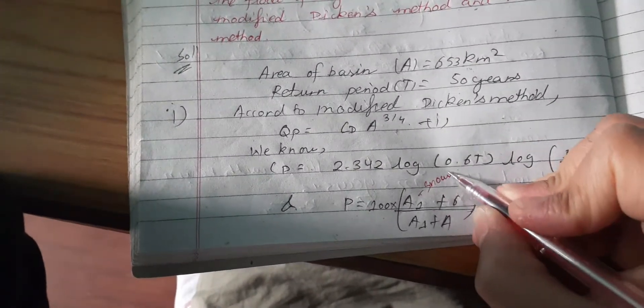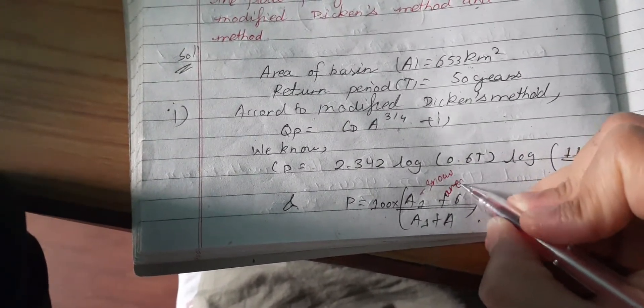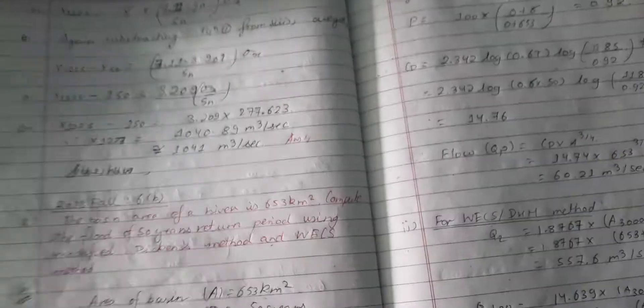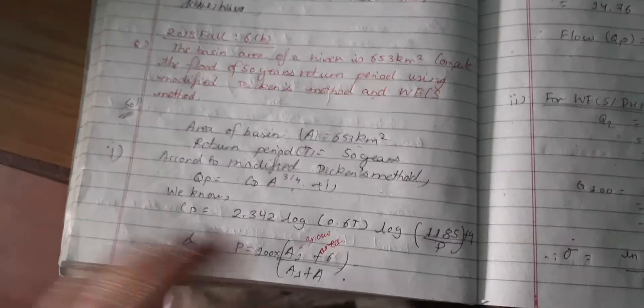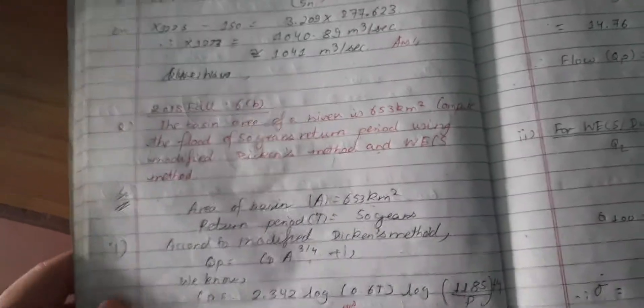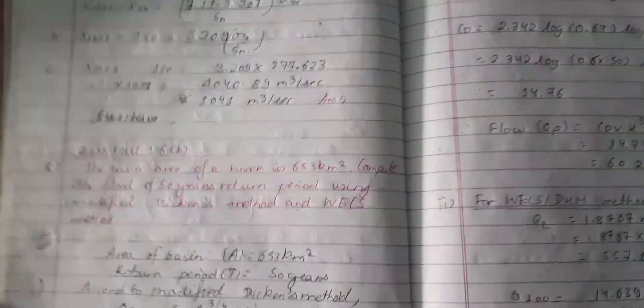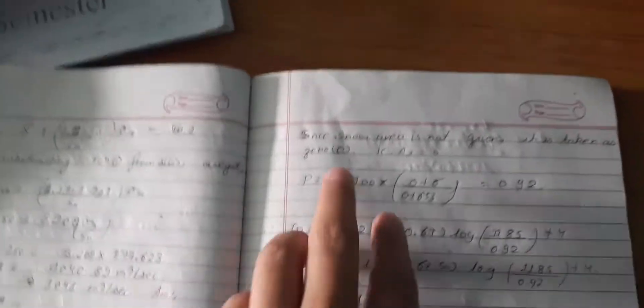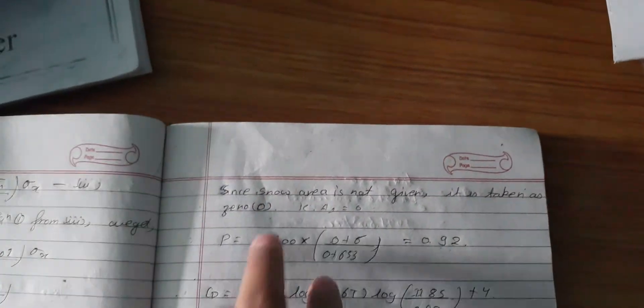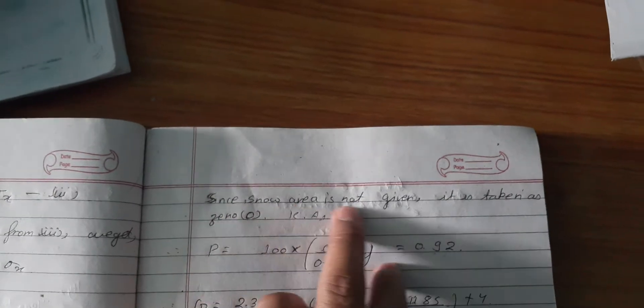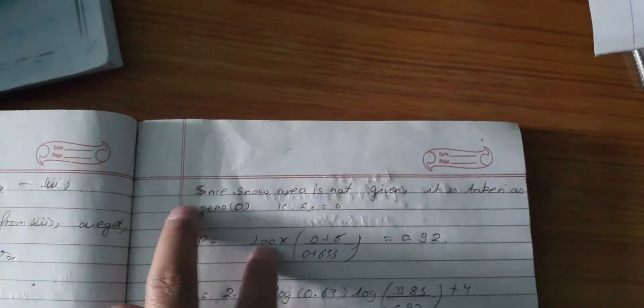The snow area is not given in the question, so we take snow area as zero. I have mentioned above here, right? Since the snow area is not given, it is taken as zero, that is A₁ = 0.